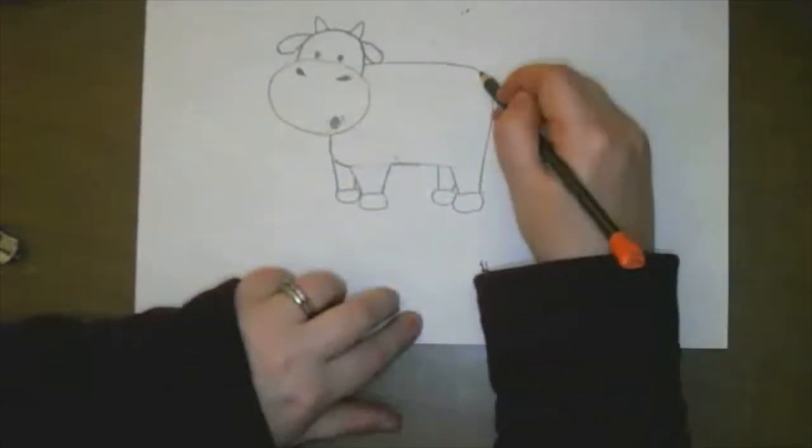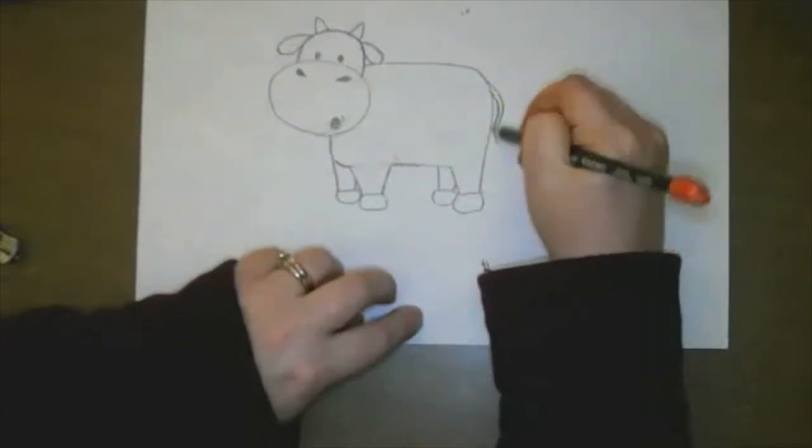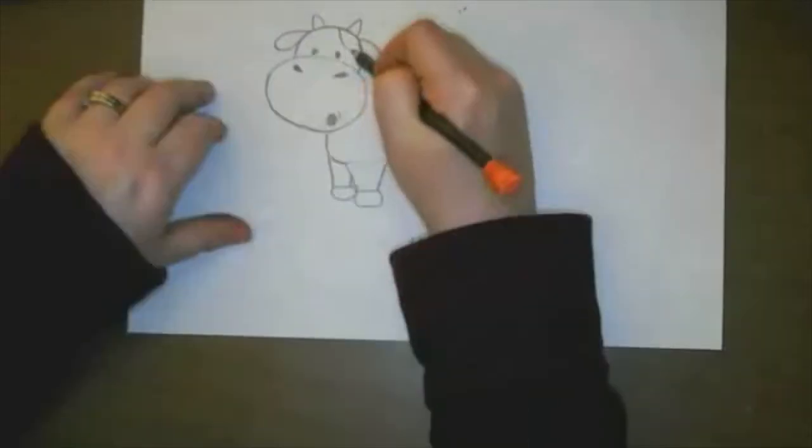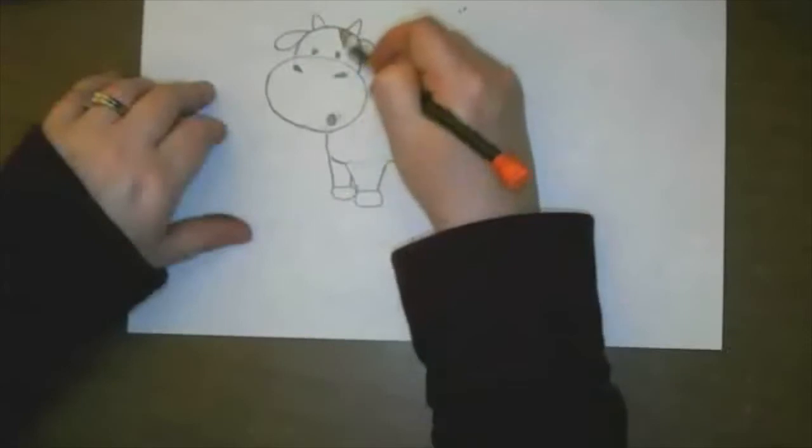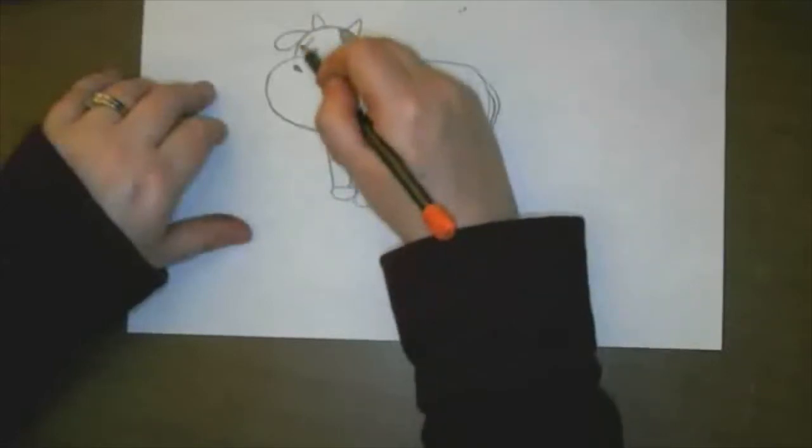And my cow is going to have a tail. My cows don't have that tail? I'm going to just draw some spots on my cow. If your cow does not have spots, that's okay. Some cows have spots and some cows don't.